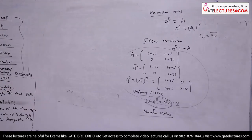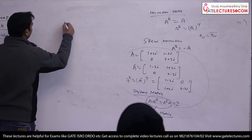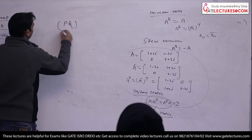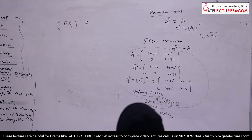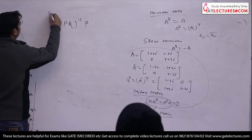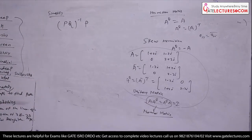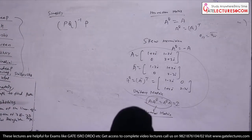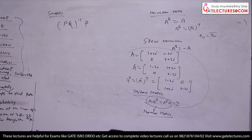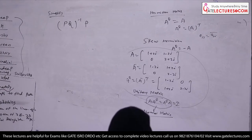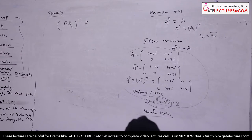You know how to do multiplication and addition — just simplify. The option is P inverse, Q inverse, P inverse, Q inverse, P, Q, P inverse, Q inverse.